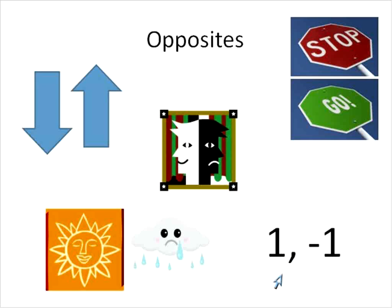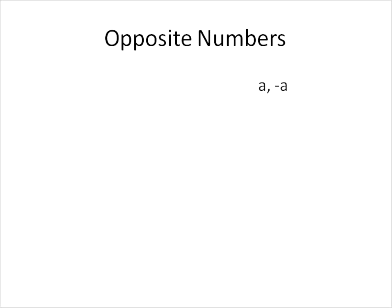And with opposite numbers, they look exactly like this. One number's positive, the other one's negative. That's about all there is to know about opposites. When you have a number a, its opposite is negative a. If you have negative 2, it would be positive 2. Positive the square root of 2, negative square root of 2. It really just goes like that.